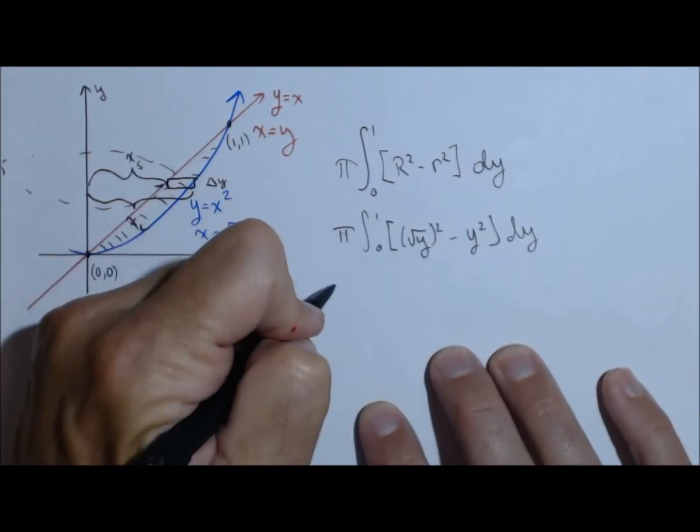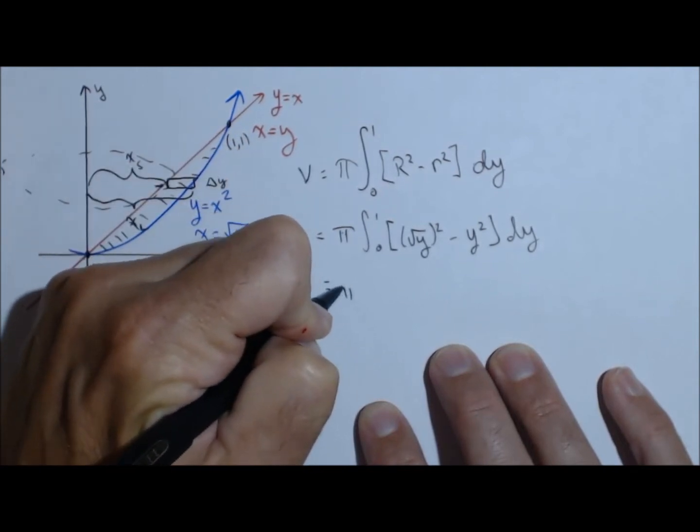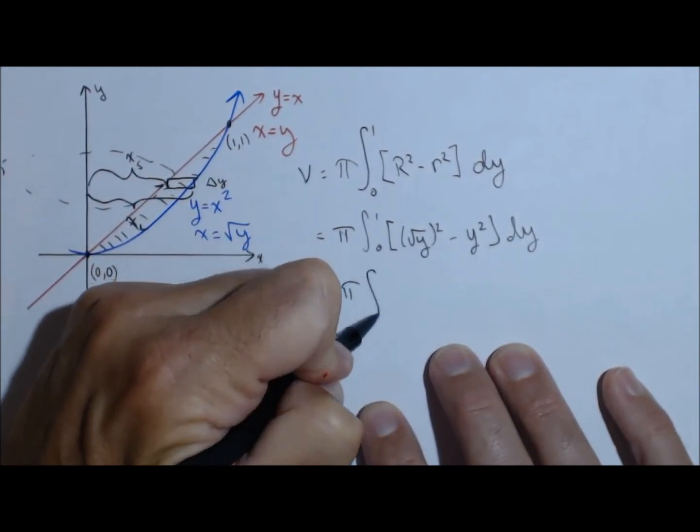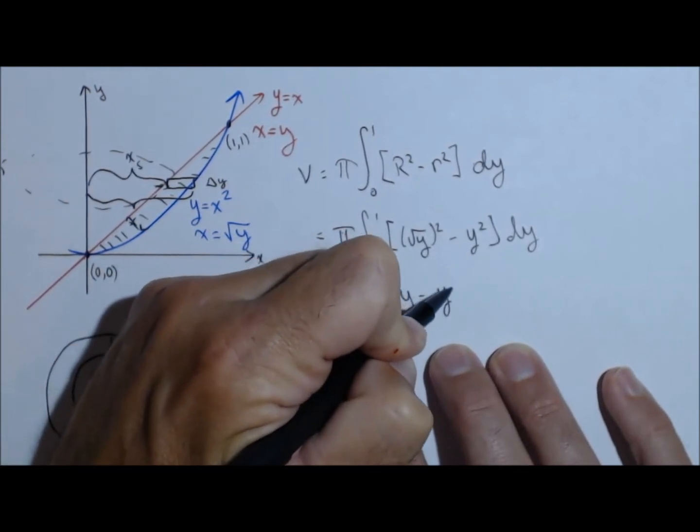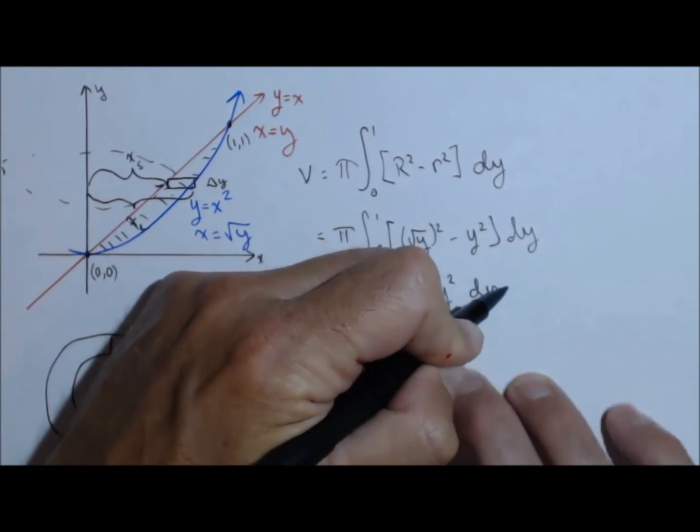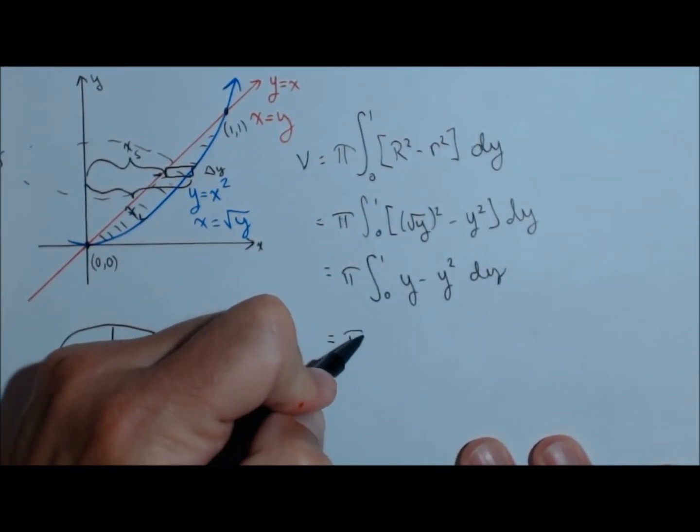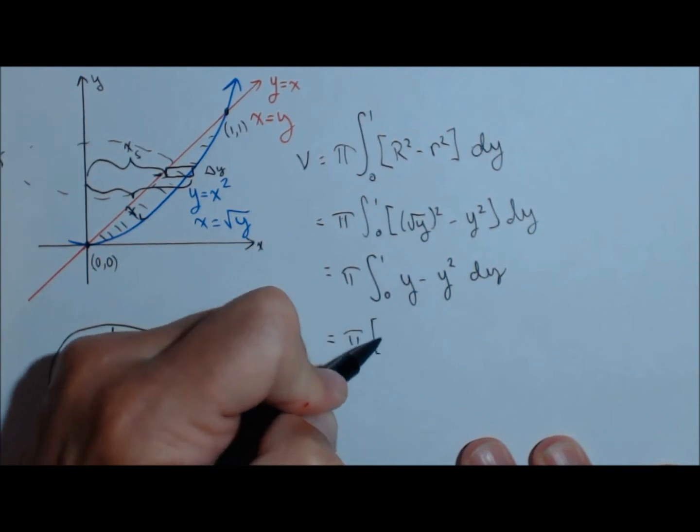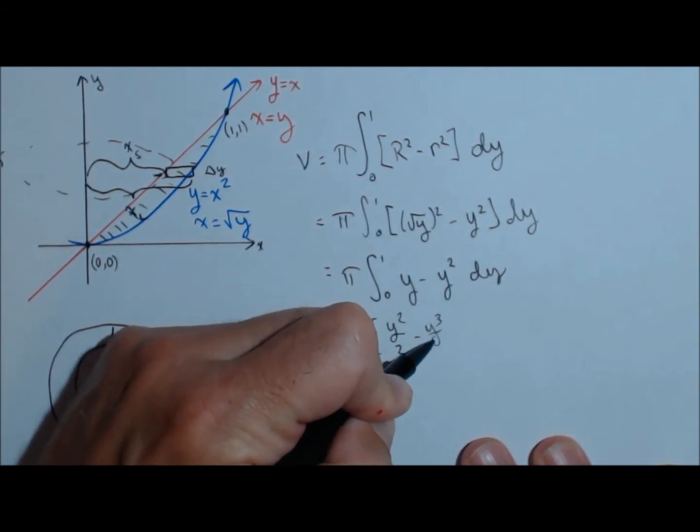This simplifies quite nicely for us. This is solving for the volume. So we have pi times the integral from zero to one of y minus y squared dy. We'll do this one piece by piece. It's going to be pretty quick. So pi times y squared over two minus y cubed over three.